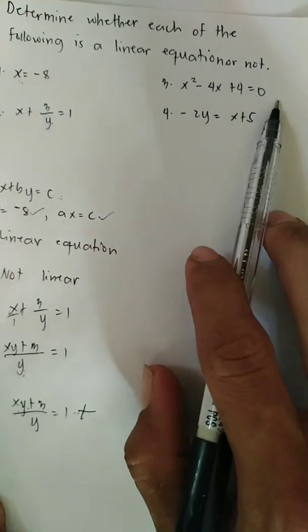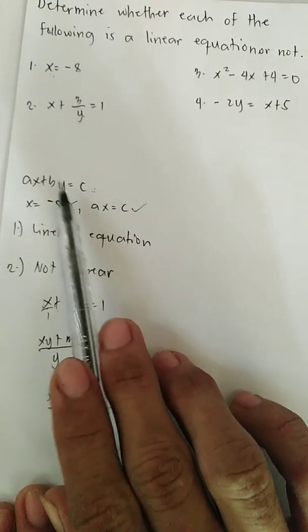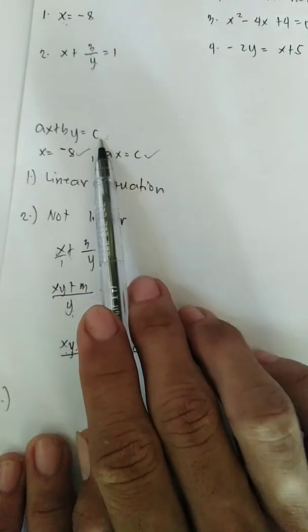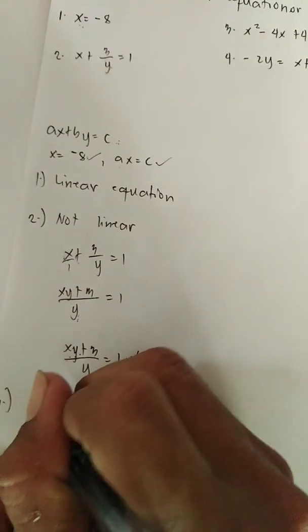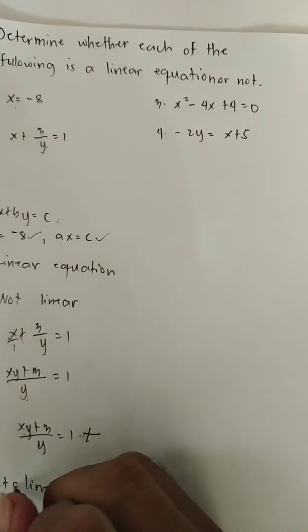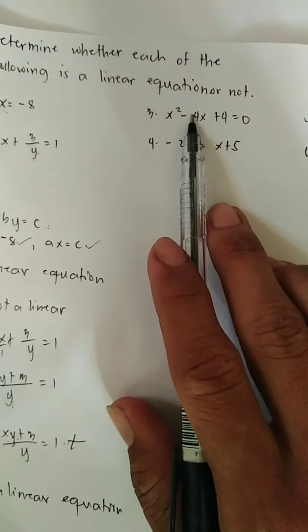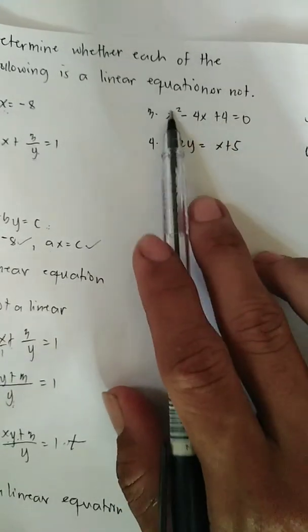For number 3, the equation is X squared minus 4X plus 4 equals 0. Just look at the standard form of a linear equation: AX plus BY equals C. In number 3, there is a power of 2 on the variable X, so we can tell this is not a linear equation. This is a quadratic equation — specifically a perfect square trinomial — since X is raised to the power of 2.